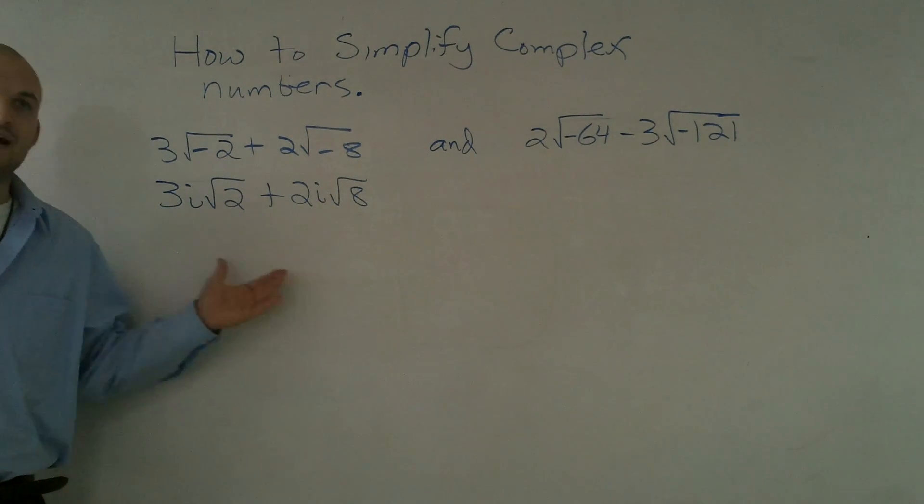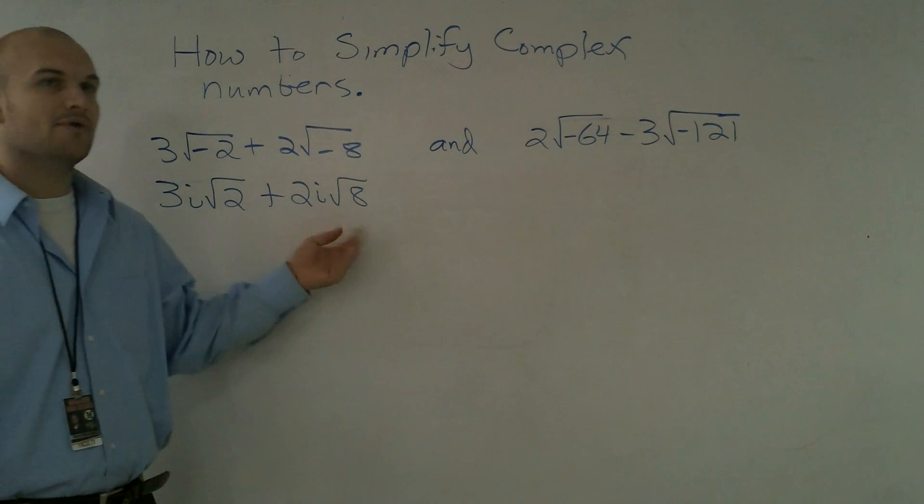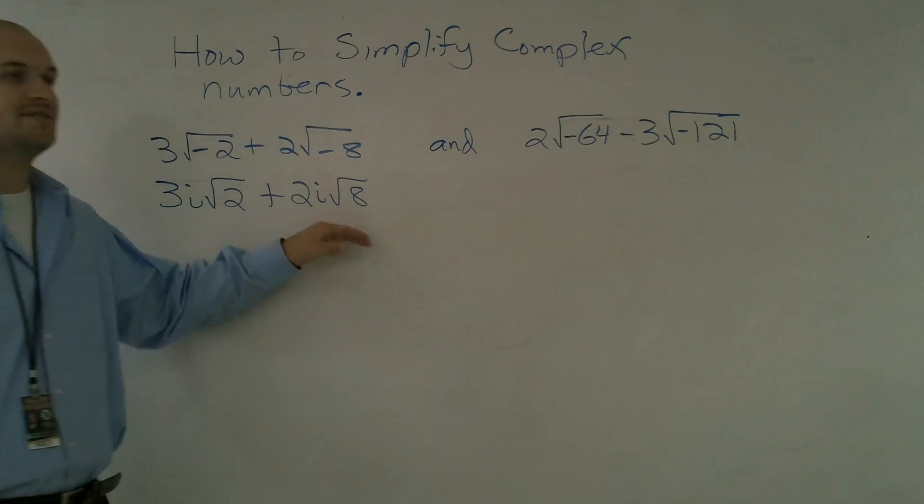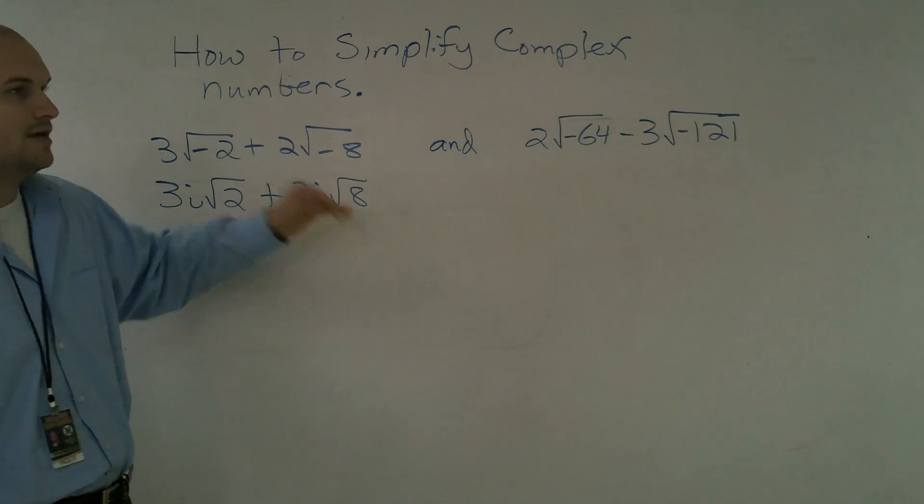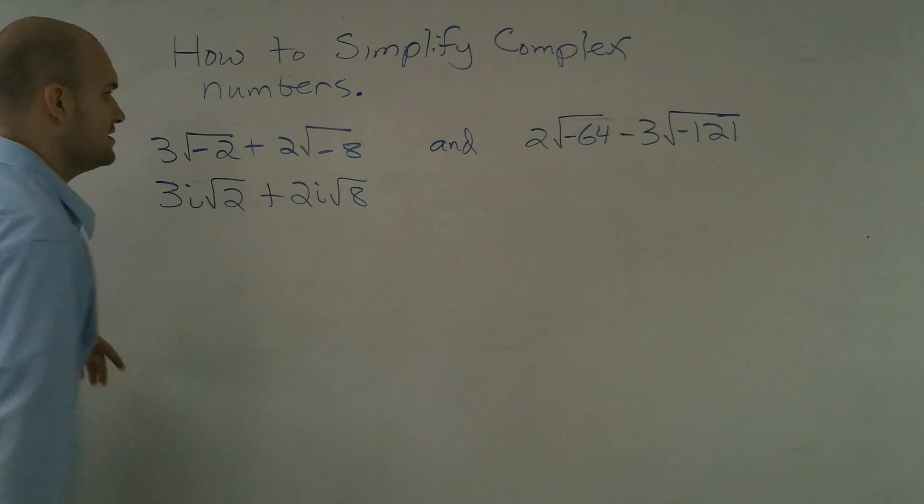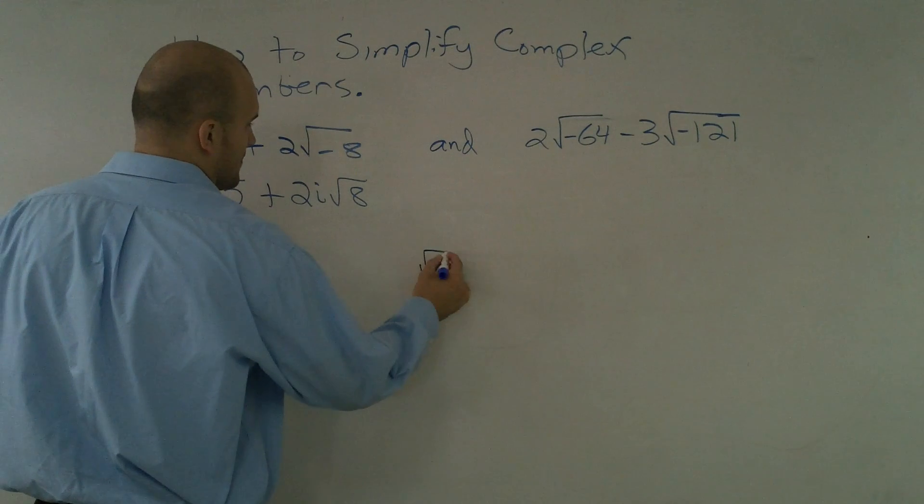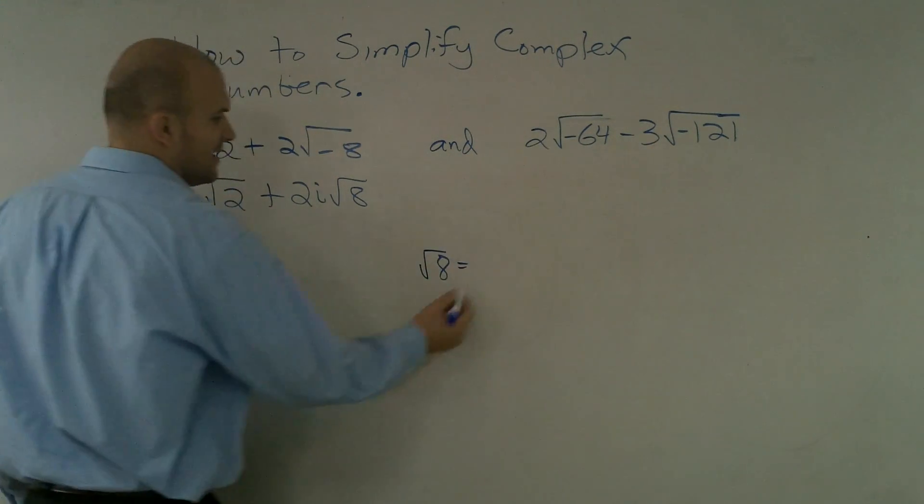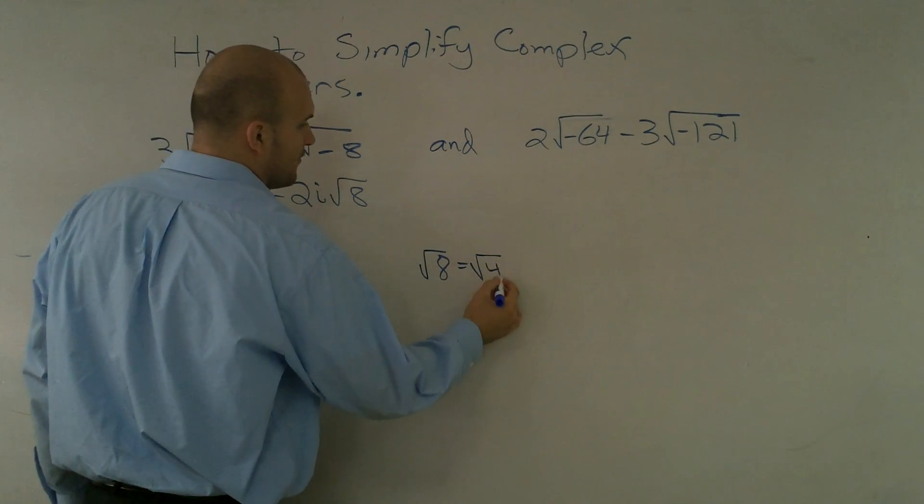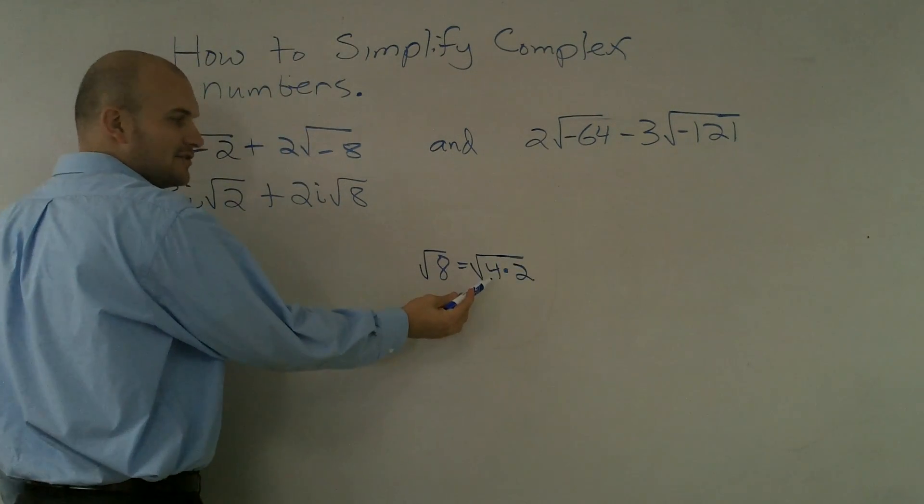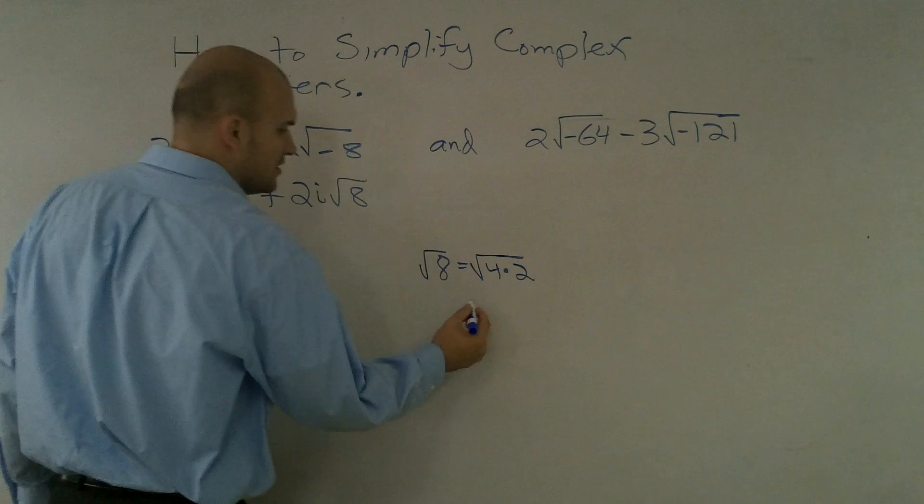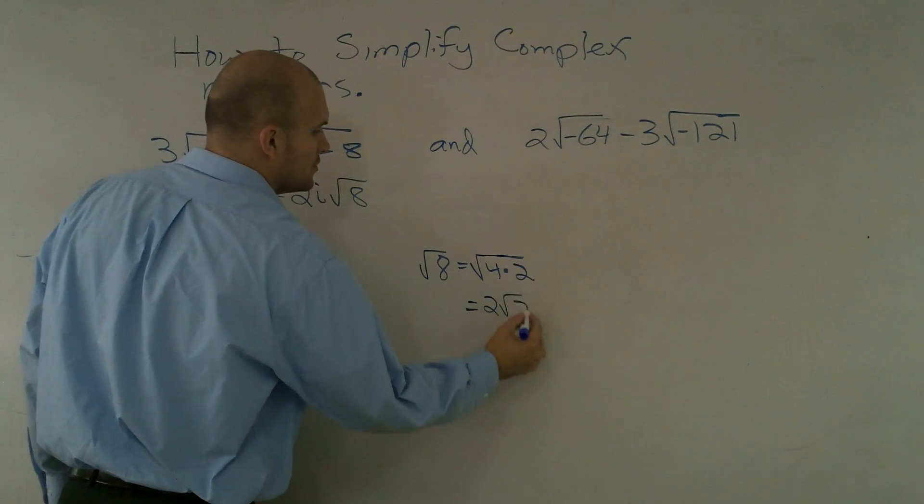And the way that we simplify radicals is we find the greatest square number that goes into our radical and we can go ahead and take that out. So if I was going to do square root of 8, I can break up the square root of 8 into the square root of 4 times 2. And then I know that now I can take out the square root of 4 because that's going to equal 2. So my answer to this would be 2 square root of 2.